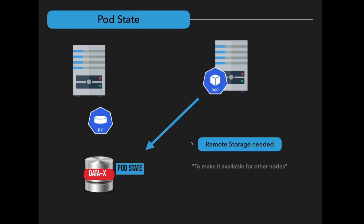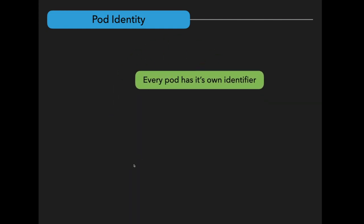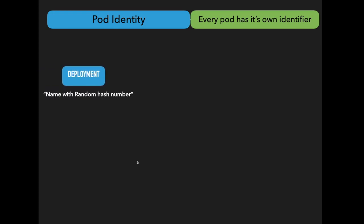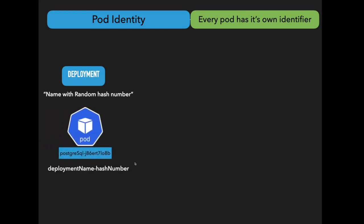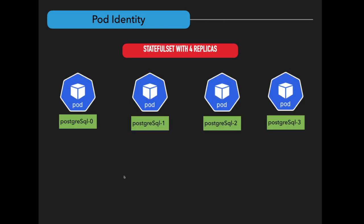For storage reattachment to work, we need remote storage, because if a pod is rescheduled from one node to another, the previous storage must be available on the second node as well. You cannot do this using local volumes because they are tied to a specific node. The last difference between deployment and StatefulSet is the pod identifier. In a deployment, every pod gets a name as pod-name followed by a random hash number. In a StatefulSet, pods have a fixed name with an ordered number at the end — like pod-name-0, pod-name-1 — with each additional pod getting the next number.